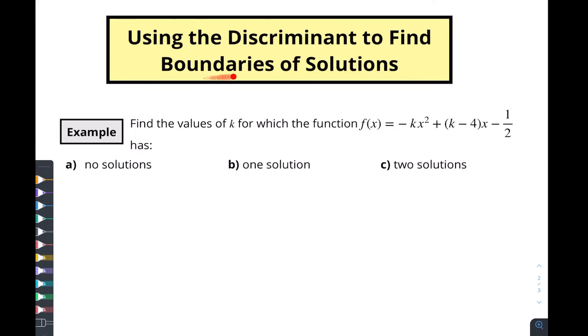We're going to use the discriminant to find boundaries of solutions. There's a couple things you need to keep in mind when we're doing this. First off, what is our discriminant? Our discriminant is b squared minus 4ac. That's the part underneath the square root in your quadratic formula.